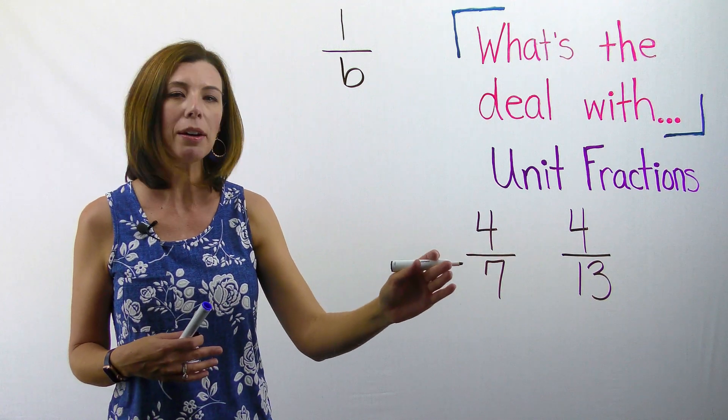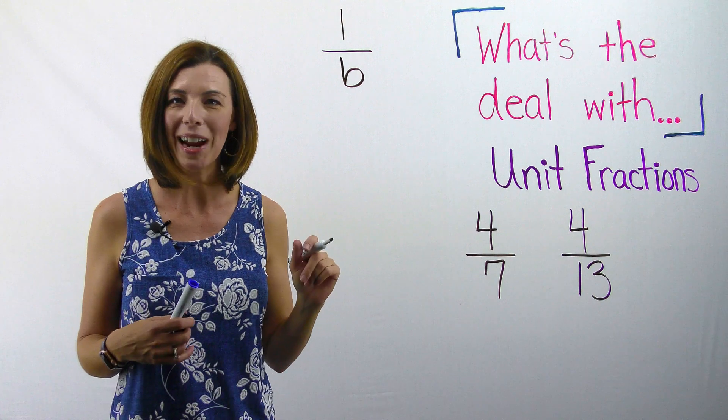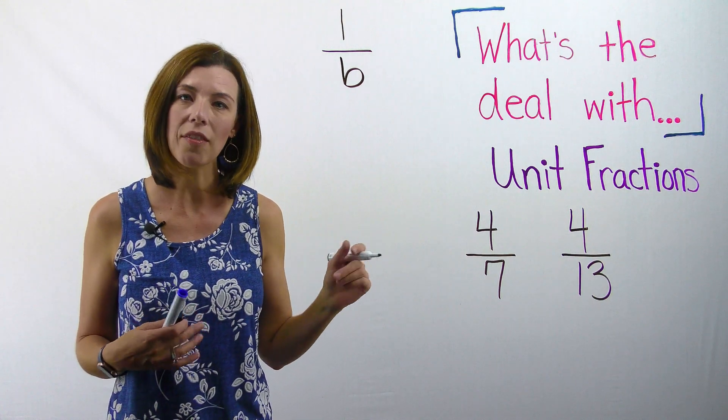So in this case, when I think about 4 sevenths, my b is gonna be sevenths, right? So the unit fraction would be one seventh.